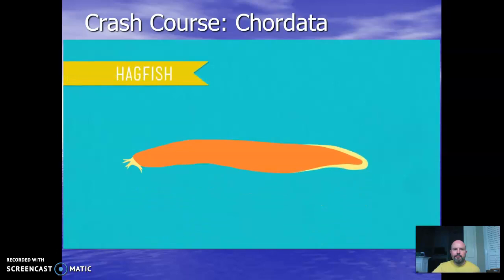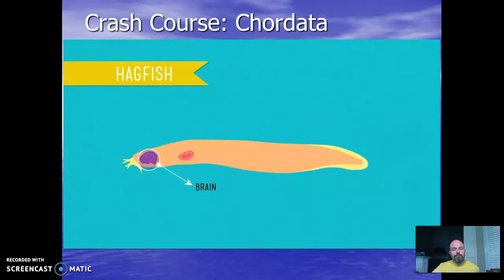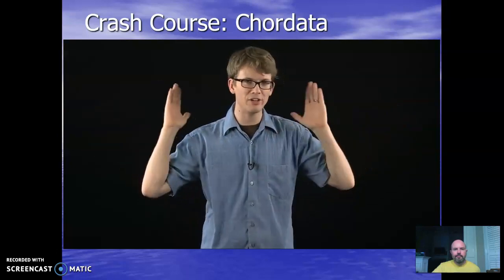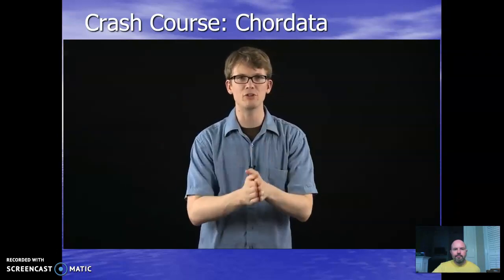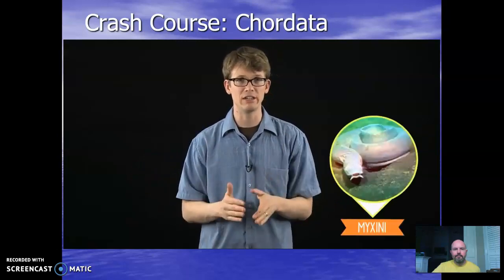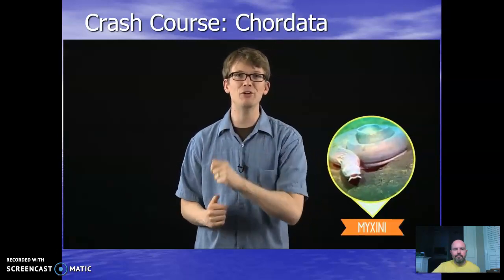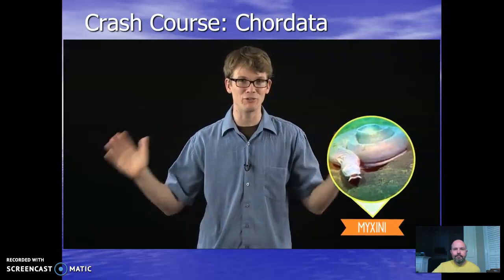Vertebrates with a head containing sensory organs and a brain are called craniates. They also always have a heart with at least two chambers. The exception is the Myxini, or hagfish — the only vertebrate class that has no vertebrae, but is classified with us because it has a skull. This snake-like creature swims by using segmented muscles to exert force against its notochord.